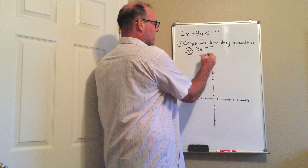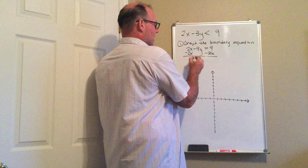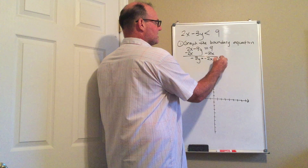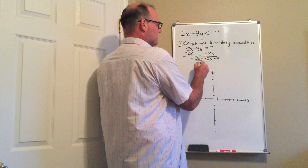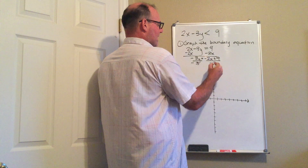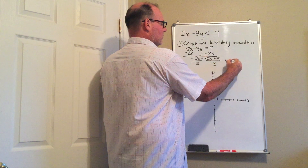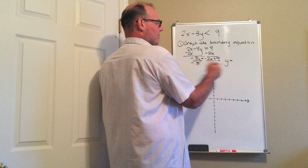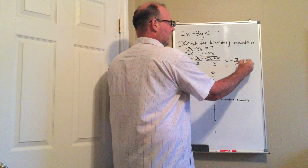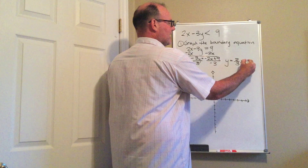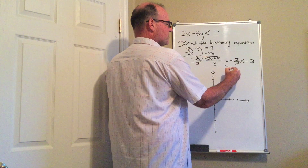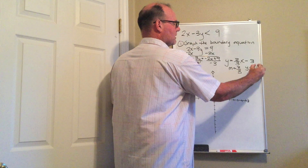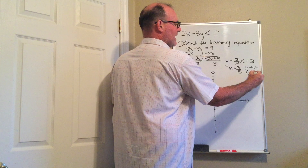To solve this for y, I'm going to subtract 2x and I get negative 3y is equal to negative 2x plus 9. Then I'll divide both sides by negative 3 — don't forget to distribute this negative 3 to both terms. A negative 2 divided by negative 3 is 2/3 x, and 9 over negative 3 is negative 3. So the slope is 2/3 and the y-intercept is (0, -3).